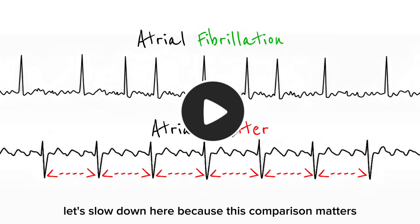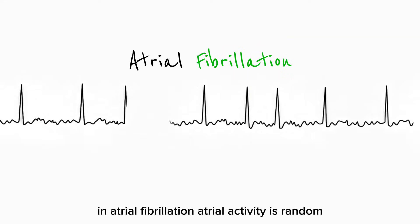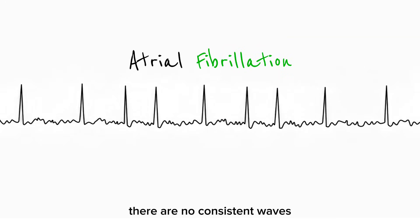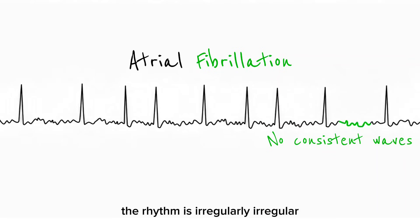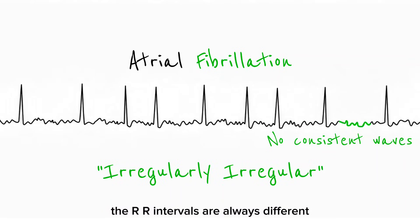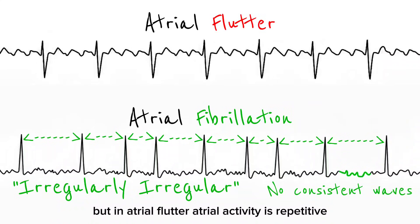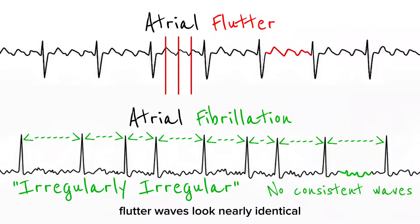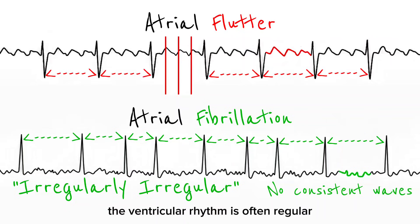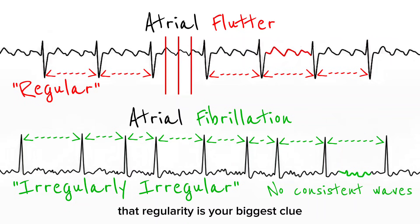This comparison matters. In atrial fibrillation, atrial activity is random — there are no consistent waves, the rhythm is irregularly irregular, and the RR intervals are always different. But in atrial flutter, atrial activity is repetitive. Flutter waves look nearly identical, and most importantly, the ventricular rhythm is often regular. That regularity is your biggest clue.